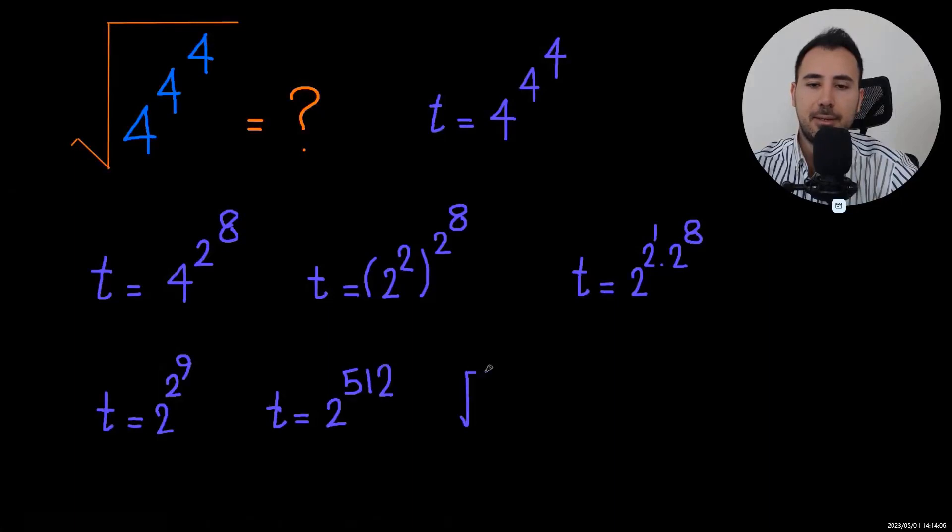The question is going to be the square root of this. All we have to do is divide 512 by 2, which is going to be 256. And there you go.